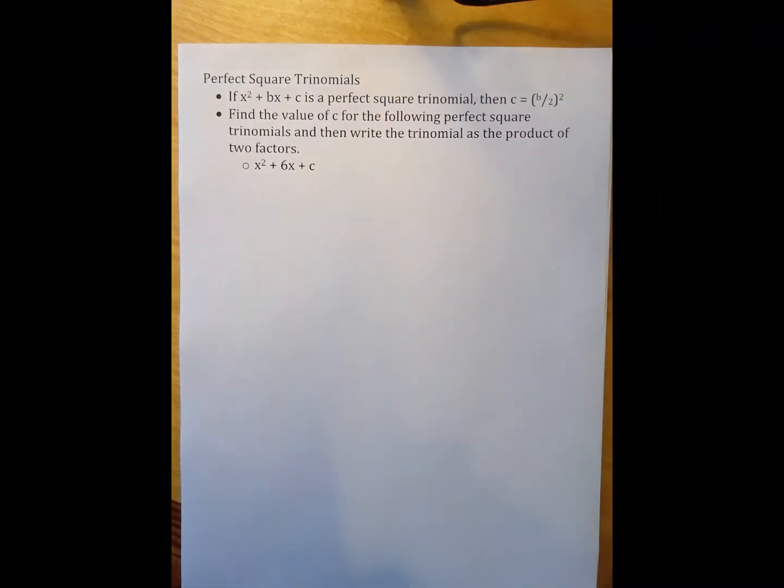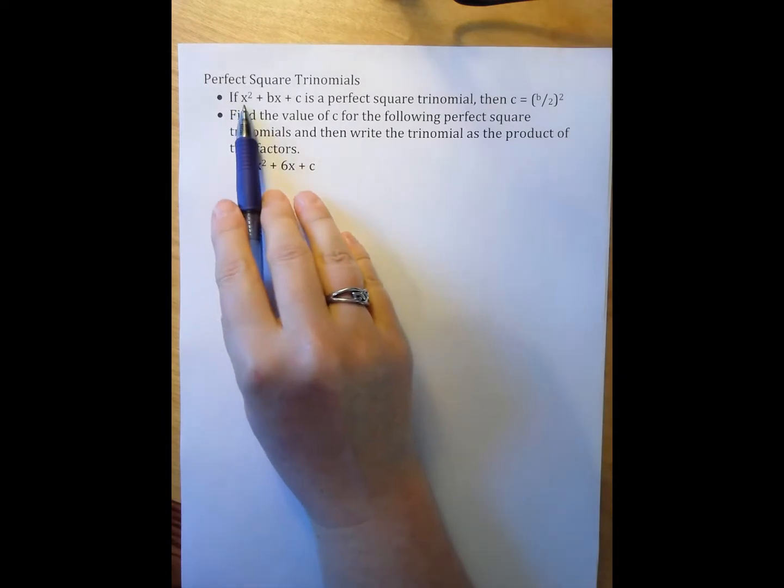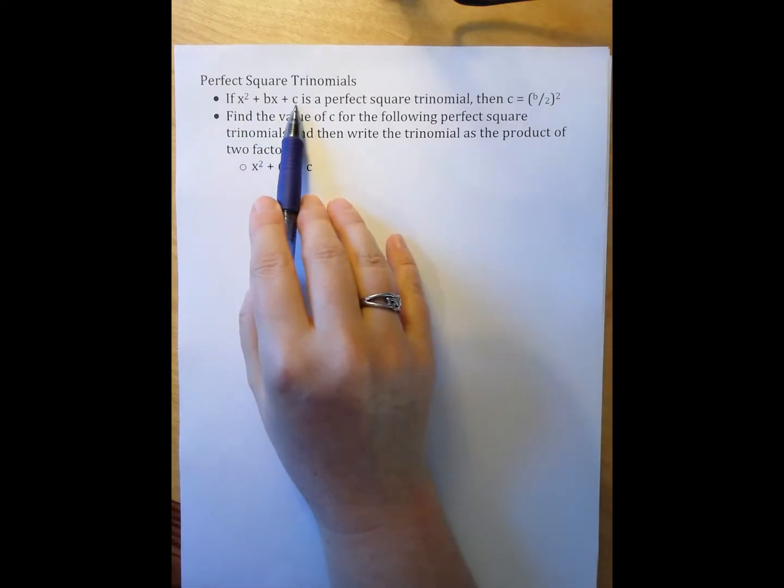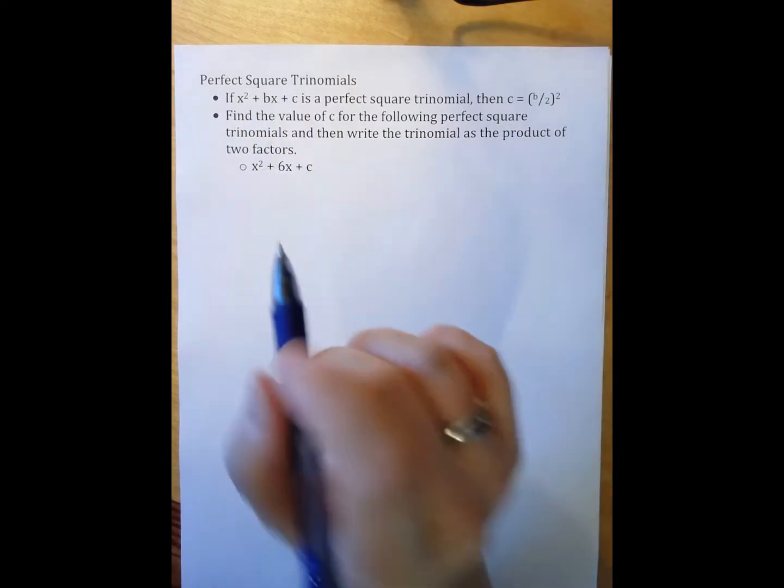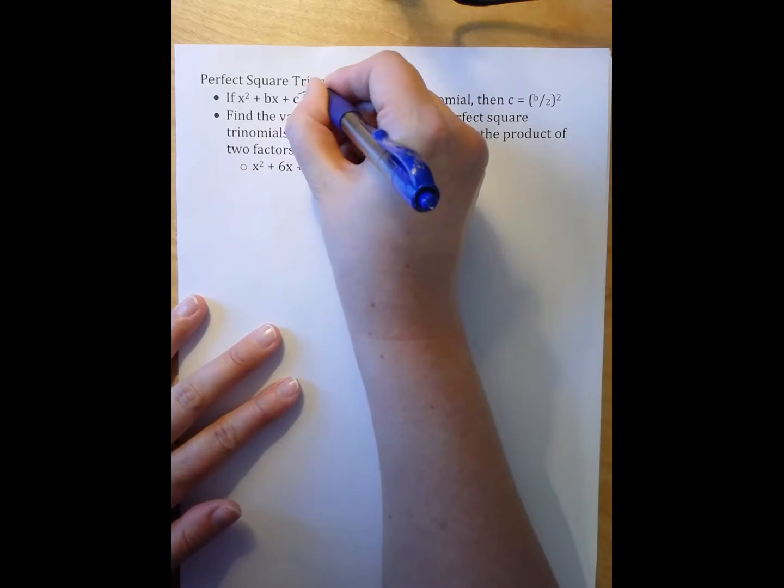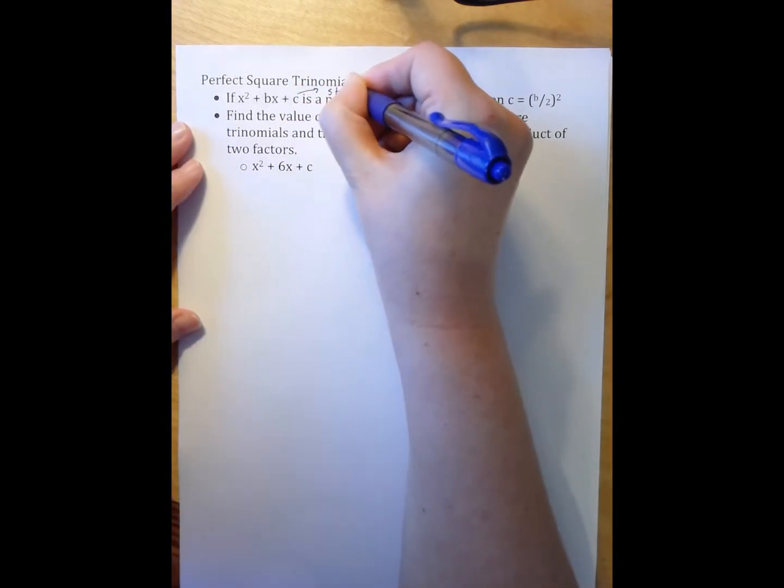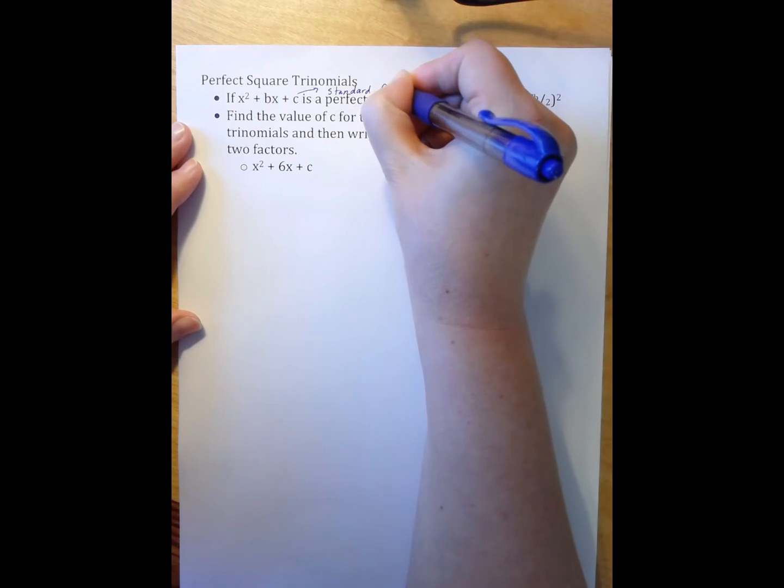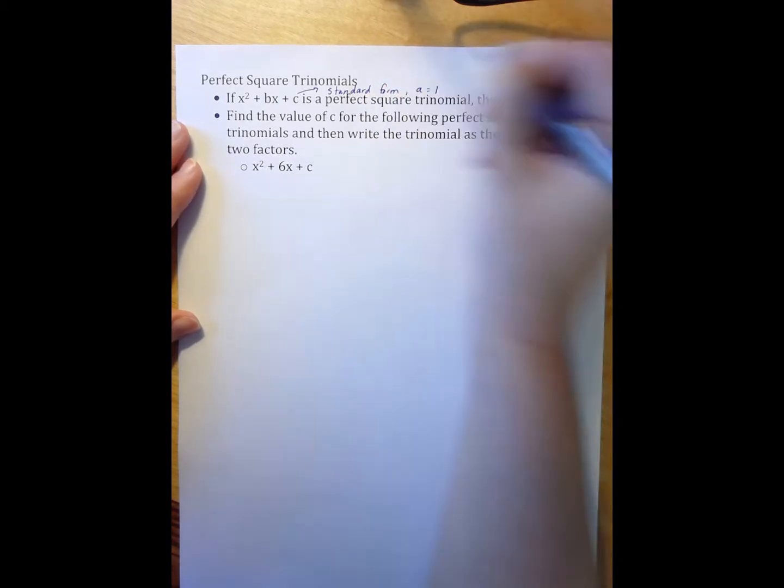These notes are on perfect square trinomials. You've explored in class the patterns that we see for the equation x squared plus bx plus c. This is standard form where a equals 1.